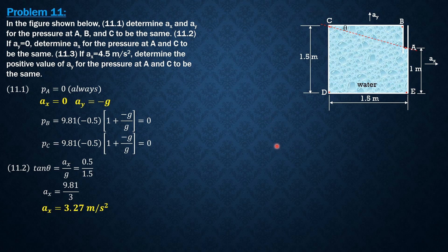And the formula for tangent theta is AX over G plus AY this time. And it is also equal to 0.5 over 1.5.